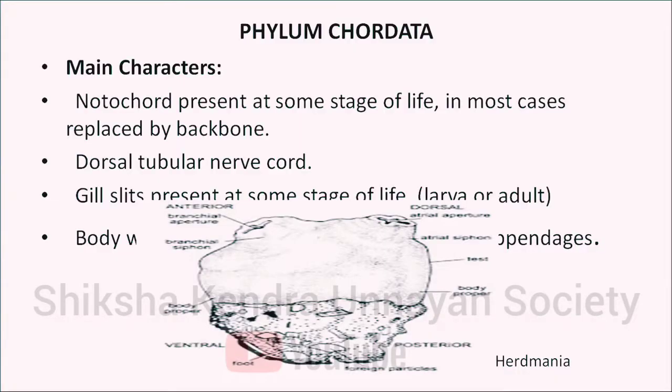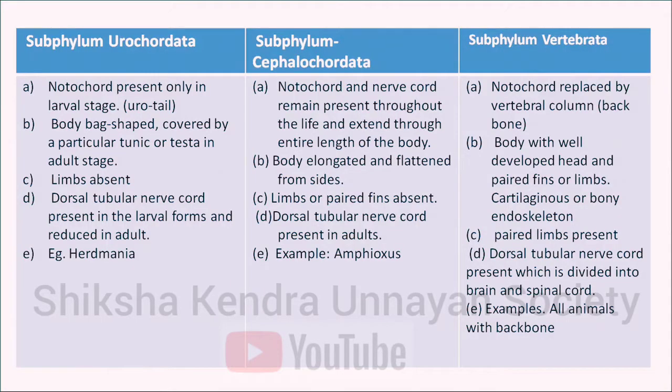The next phylum is phylum Chordata. The main characteristic is that notochord is present at some stage of life; in most cases it is replaced by a backbone. The dorsal tubular nerve cord is present. Gill slits are present at some stage — larval or adult. Body has a head and trunk and two pairs of appendages. It has three subphyla: Urochordata, Cephalochordata and Vertebrata.